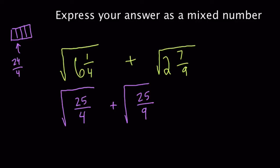Now you take the square root of a fraction, you can just take the square root of numerator and denominator. It's a basic law of exponents. So here, the square root of 25 is 5. The square root of 4 is 2. And over here we have the square root of 25, which is 5, and the square root of 9, which is 3.